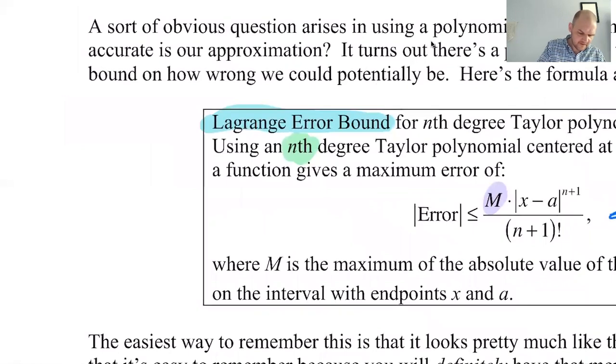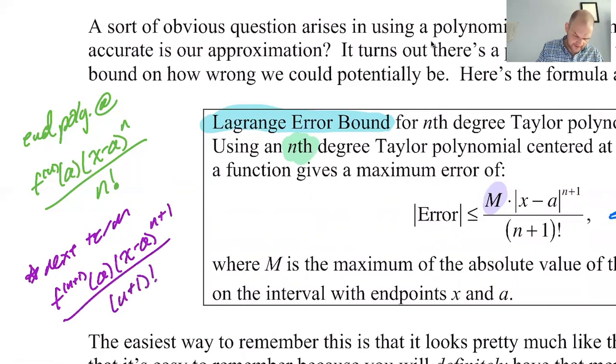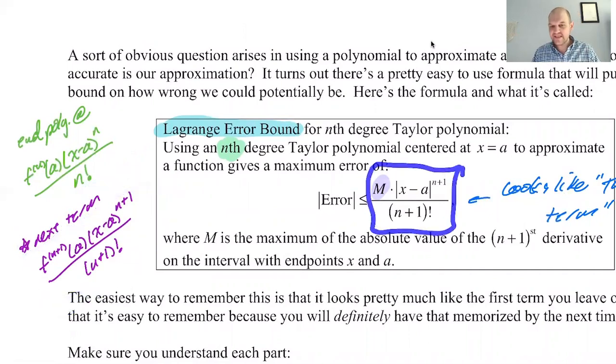Let me just write it instead of saying it. So if you end your polynomial at the nth derivative at a to the n over n factorial, that's where you end your polynomial. The next term would have been, if we kept going, the n plus first derivative at the center, x minus a to the n plus 1, and then over n plus 1 factorial. Now compare that to the error. This is what the next term, the first term left off, would have looked like. The error basically looks like that. It looks almost identical, except there's an absolute value.